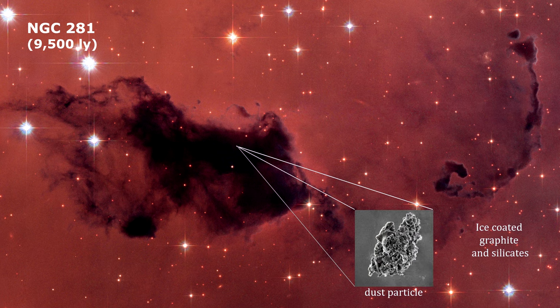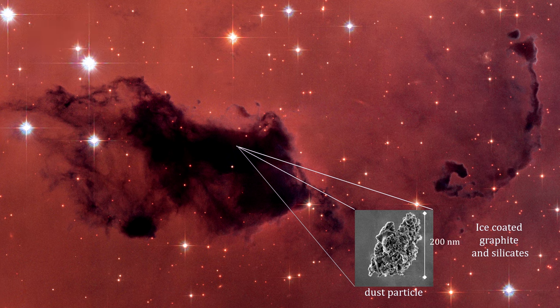The dust is made of thin, highly flattened flakes of graphite and silicate — that's carbon and rock-like minerals — coated with water ice. Each dust flake is roughly the size of the wavelength of blue light, or smaller. The dust is probably formed in the cool outer layers of red giant stars and dispersed in the red giant winds and planetary nebulae.